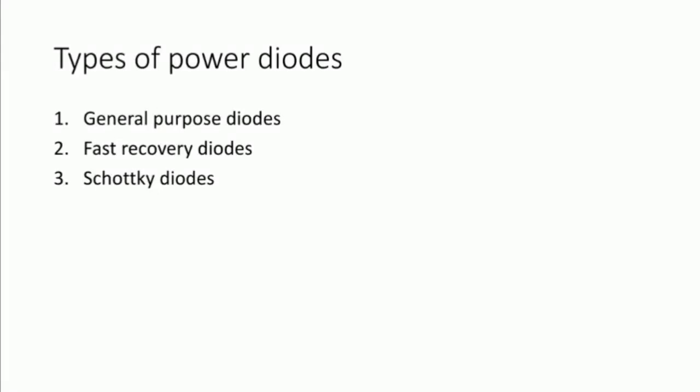Good morning. Here we are going over the types of power diodes. In these types of power diodes, generally there will be three types: the first one is general purpose diode, the second one is fast recovery diode, and the third one is Schottky diode. Here we will see the major points relating to each of these.